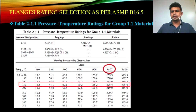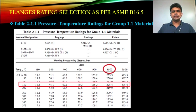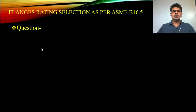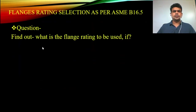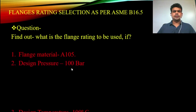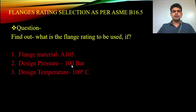I hope you understand these topics and are now able to identify which flange rating should be used and which flange rating needs to be replaced, if you know the material, pressure, and temperature. Here is a question for you: find out what flange rating should be used if the flange material is A105, design pressure is 100 bar, and design temperature is 100 degrees Celsius. Please give your answer in the comment section.